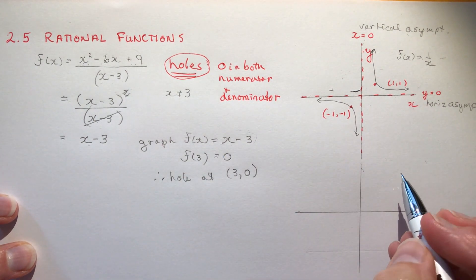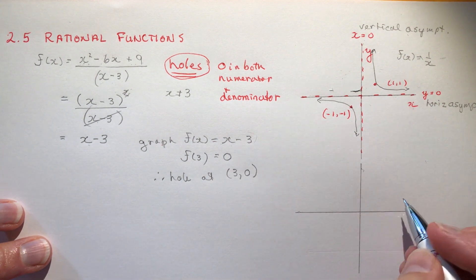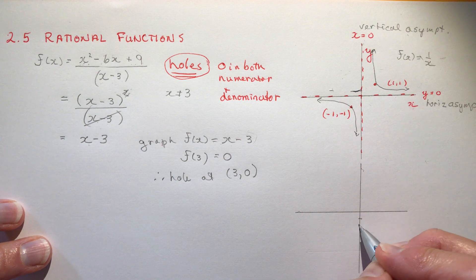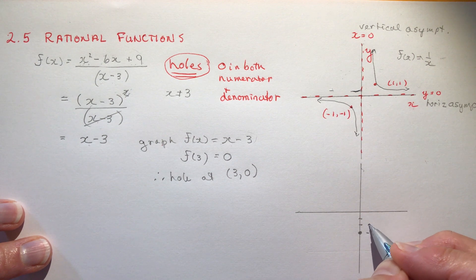Now f(x) equals x minus 3 is simply a line, it's a line degree 1. It has a y-intercept of minus 3, that would be right here, and it has a slope of 1.